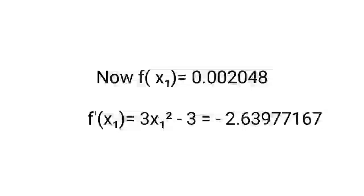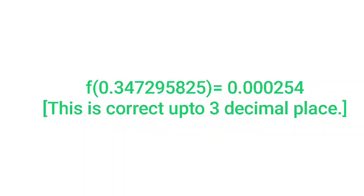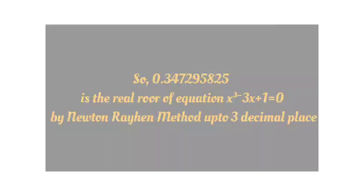Now f(x₁) = 0.002048 and f'(x₁) = 3x² - 3 = -2.63977167. By Newton-Raphson method, new approximate root x₂ = x₁ - f(x₁)/f'(x₁) = 0.347295825. And f(0.347295825) = 0.000254, which is correct up to 3 decimal places. So 0.347295825 is the real root of x³ - 3x + 1 = 0 by Newton-Raphson method up to 3 decimal places.